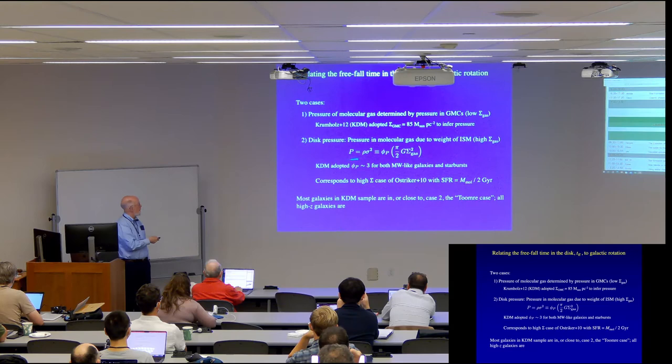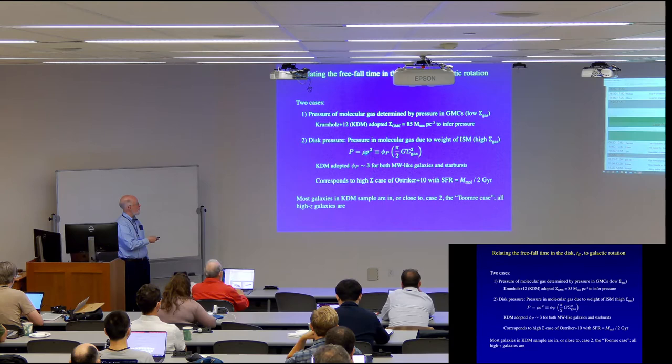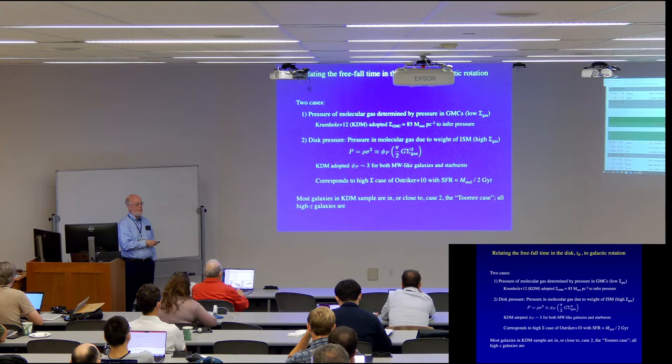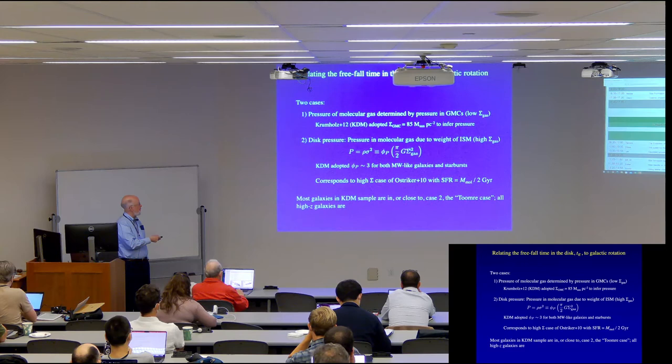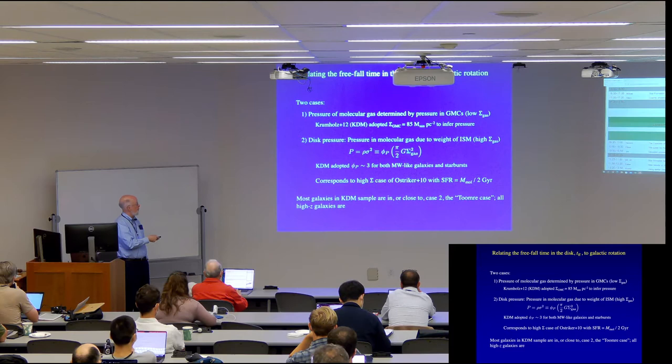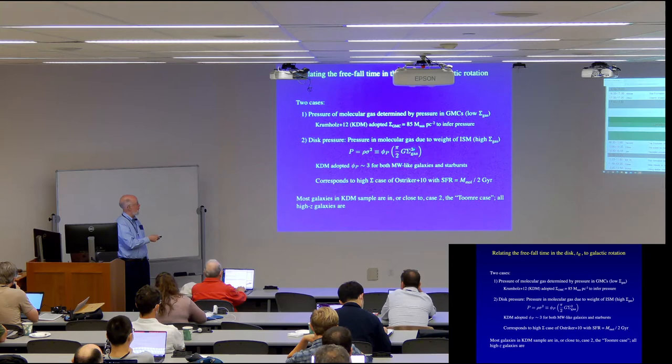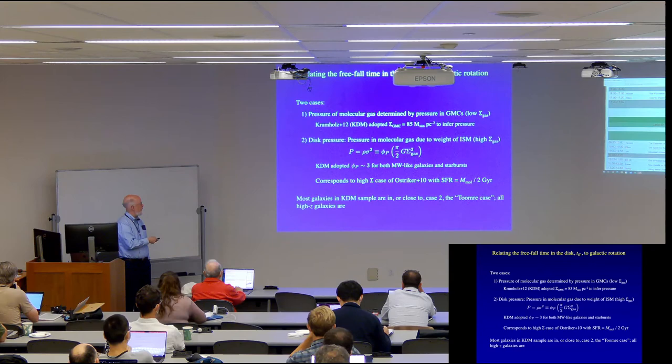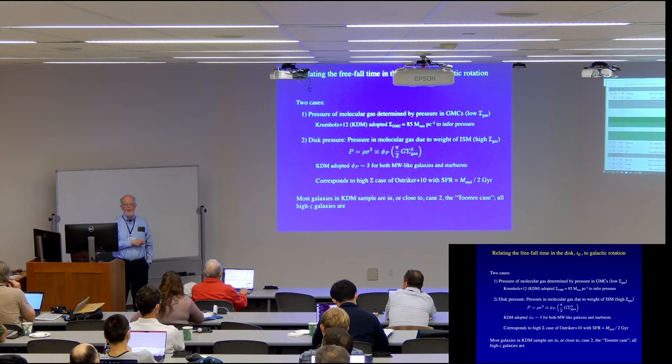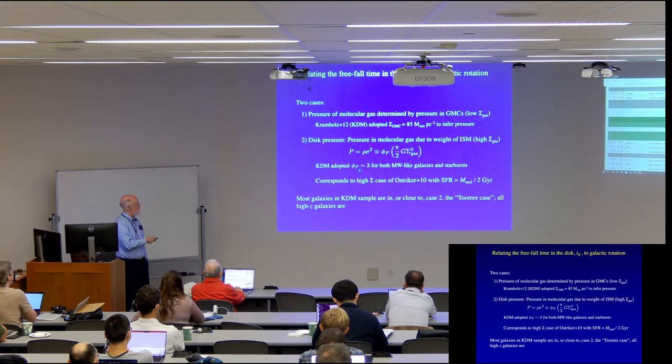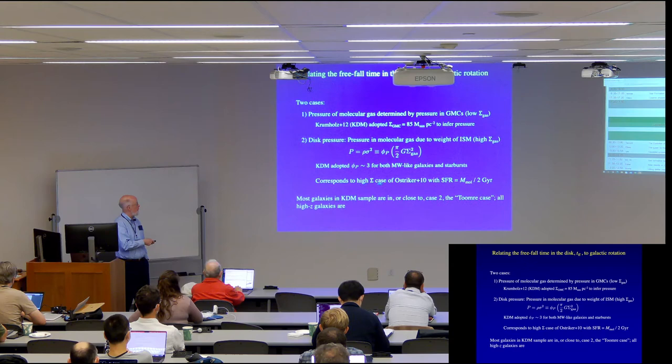And when you have a higher surface density of gas, then basically the molecular gas is much more pervasive. And what you can write is that the pressure in this gas, which is just the density times the square of the velocity dispersion, is proportional to the weight of the gas above it. And you can then relate that, the weight of the gas, that's proportional to the surface density. And then that's the mass, and then you have the gravitational field, which has another factor of g times that. But you also have stars that are exerting gravity. So that then puts the factor out here in front. And what Mark and I showed some years ago was that even in very different cases like the Milky Way and starburst galaxies, this factor is of order three. So that's the number that we'll adopt.